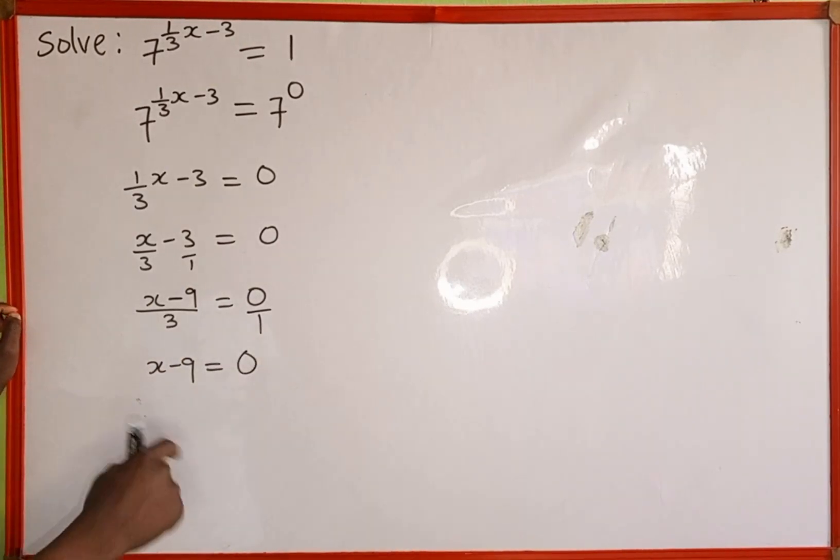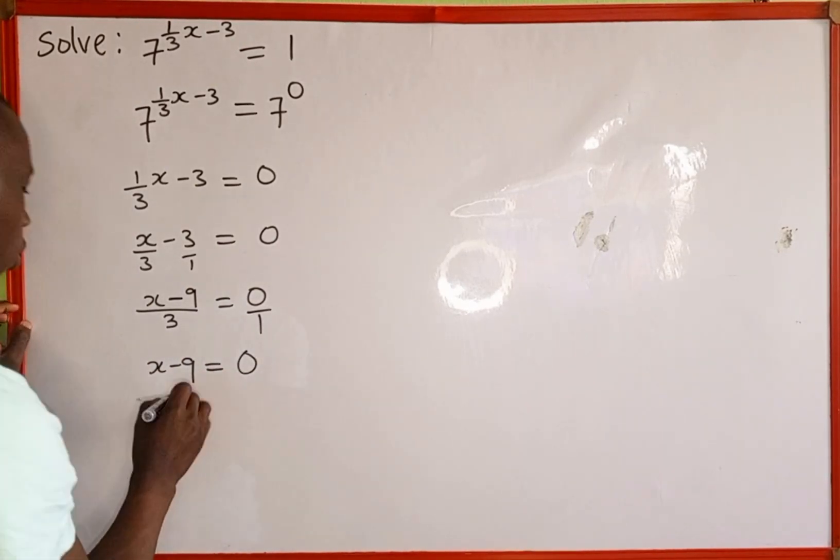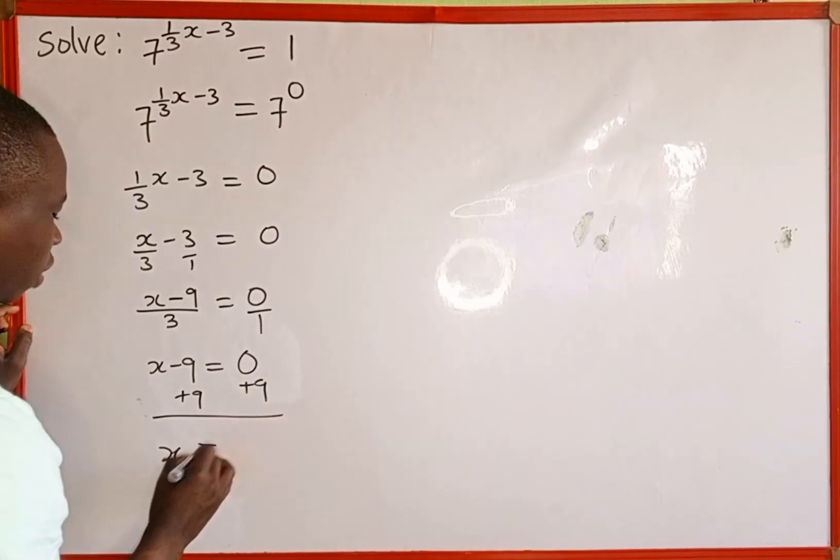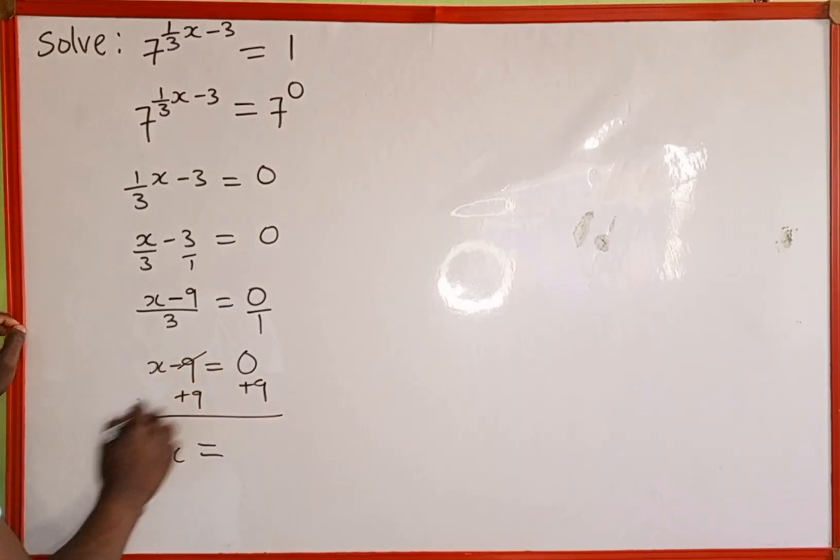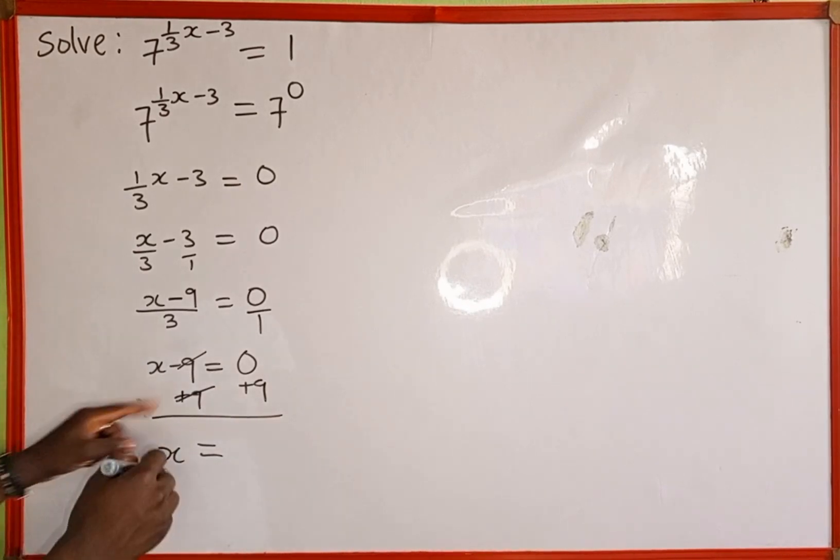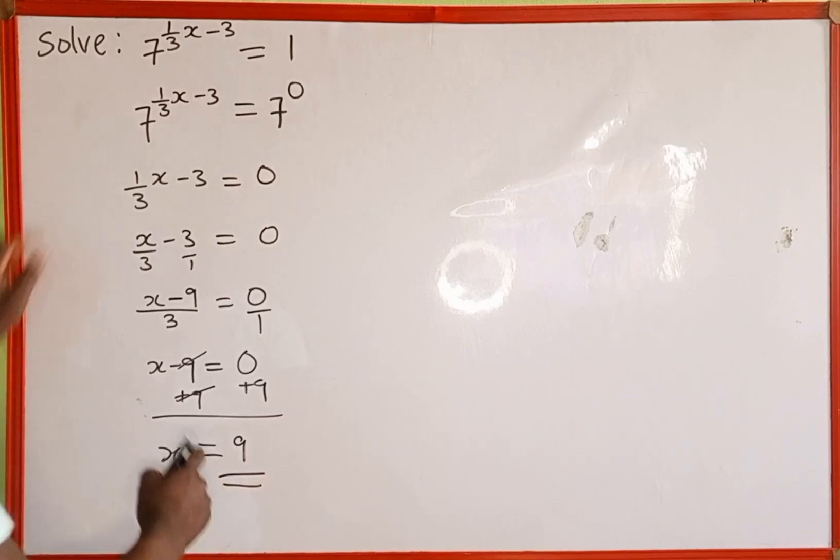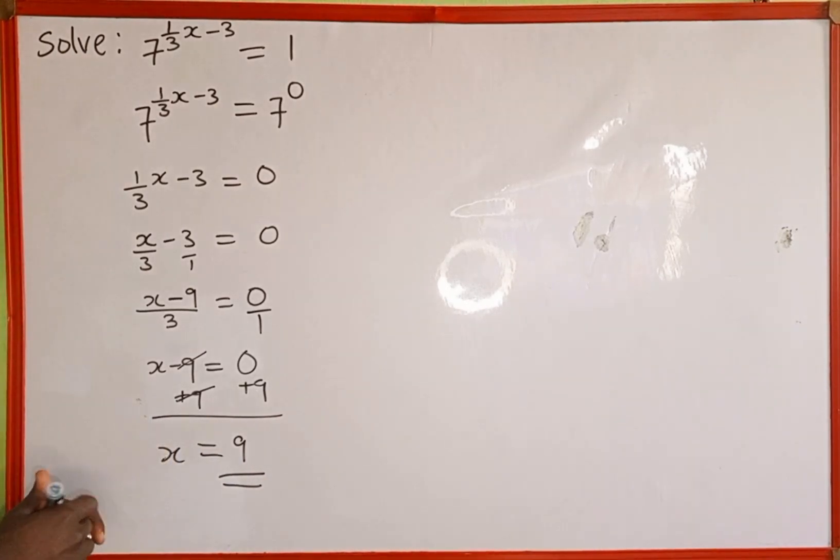So now we are going to add 9 to both sides of this equation. Plus 9, then plus 9. So x will equal, because this negative 9 and positive 9 cancel, 0 plus 9 is the same as 9. Therefore, 9 is the value of x that satisfies this exponential equation.